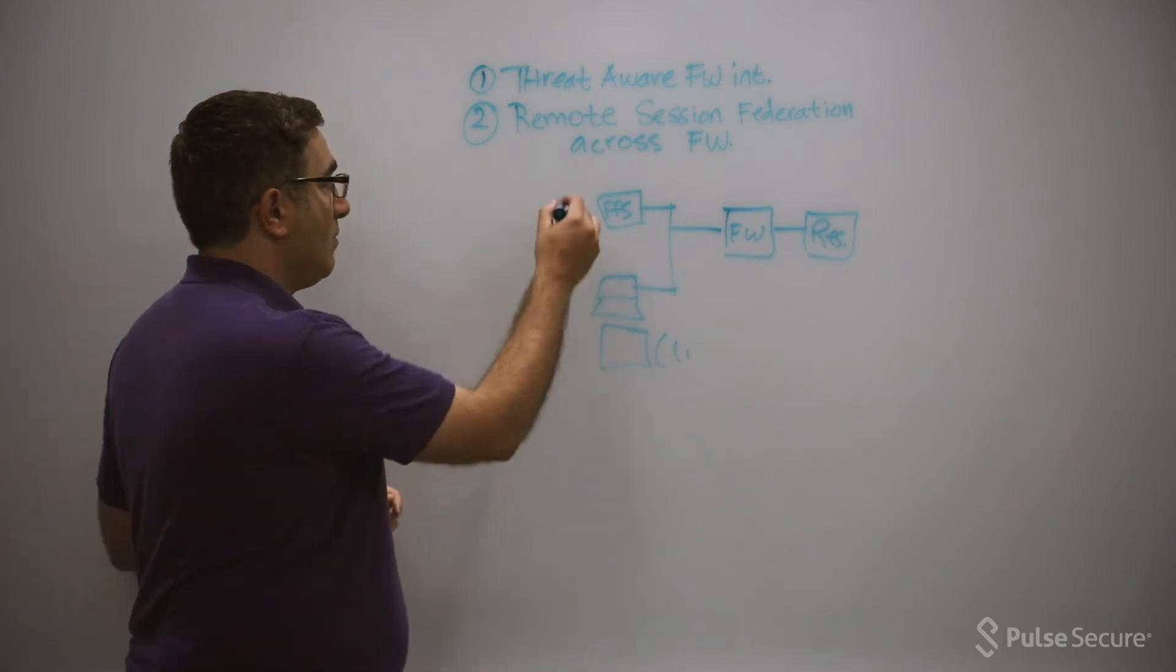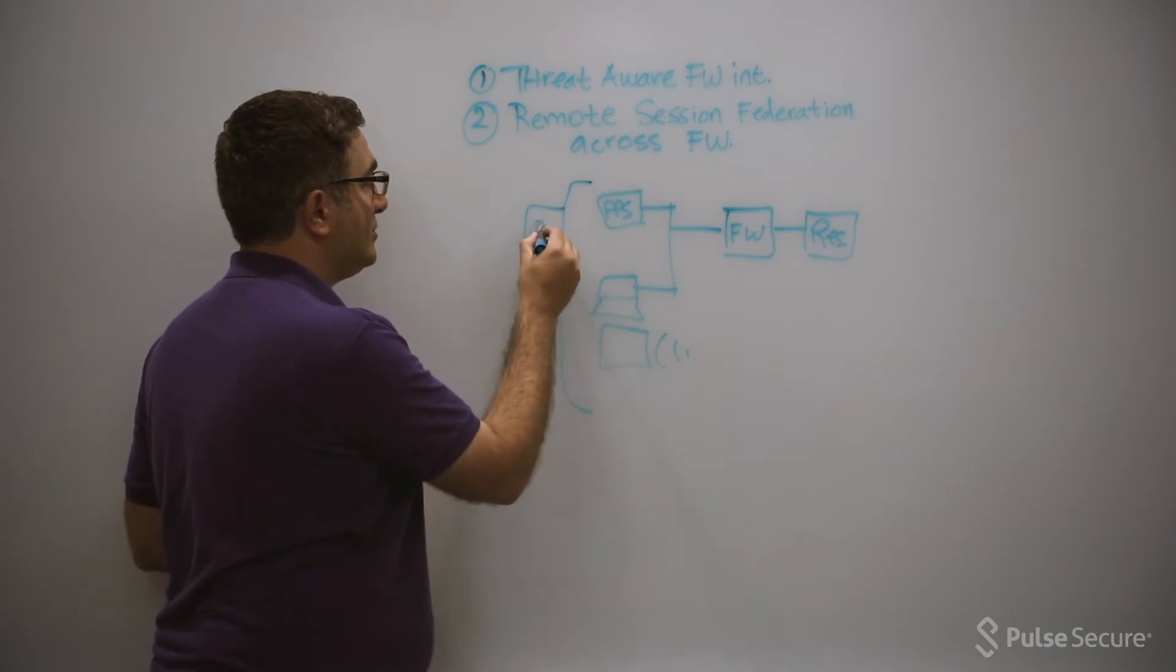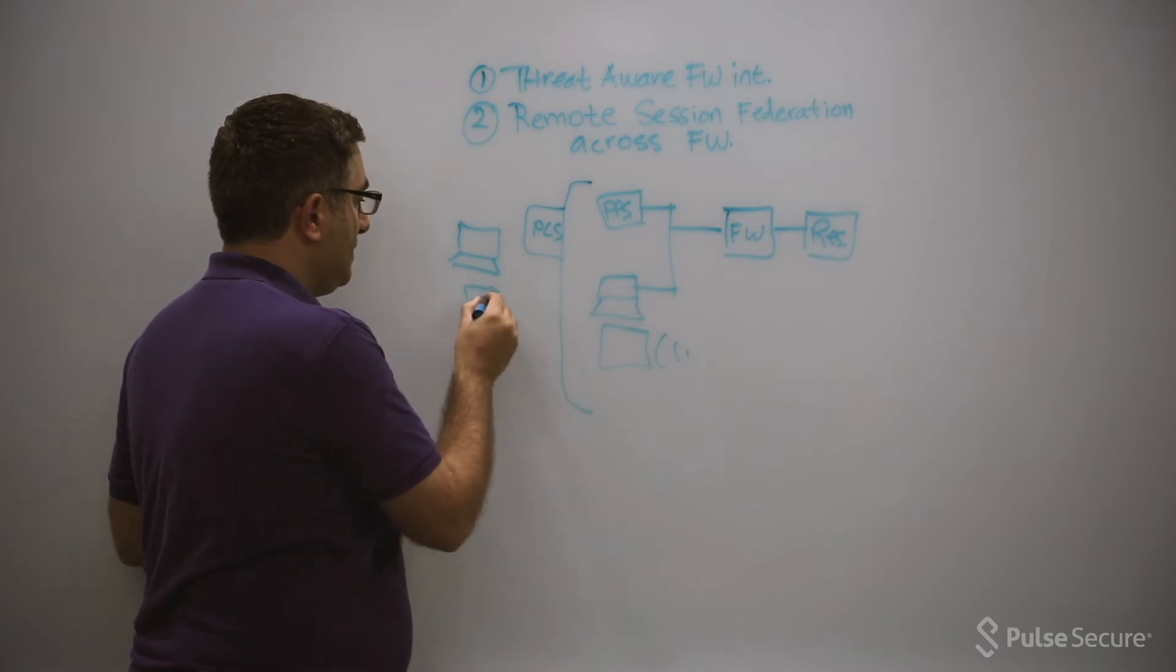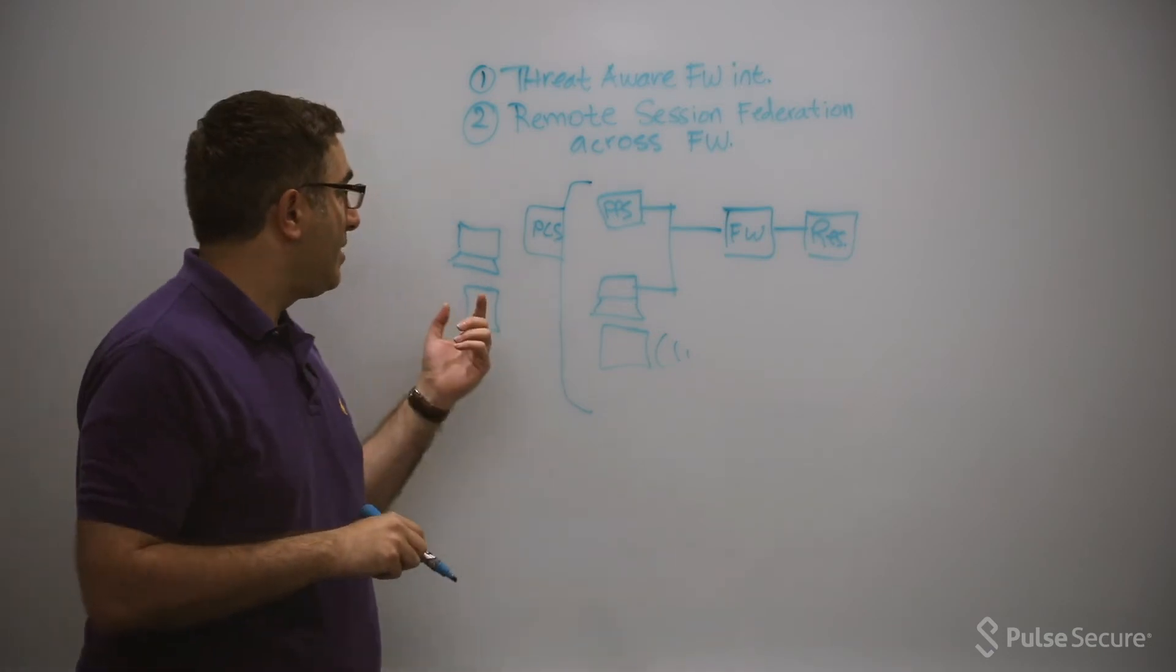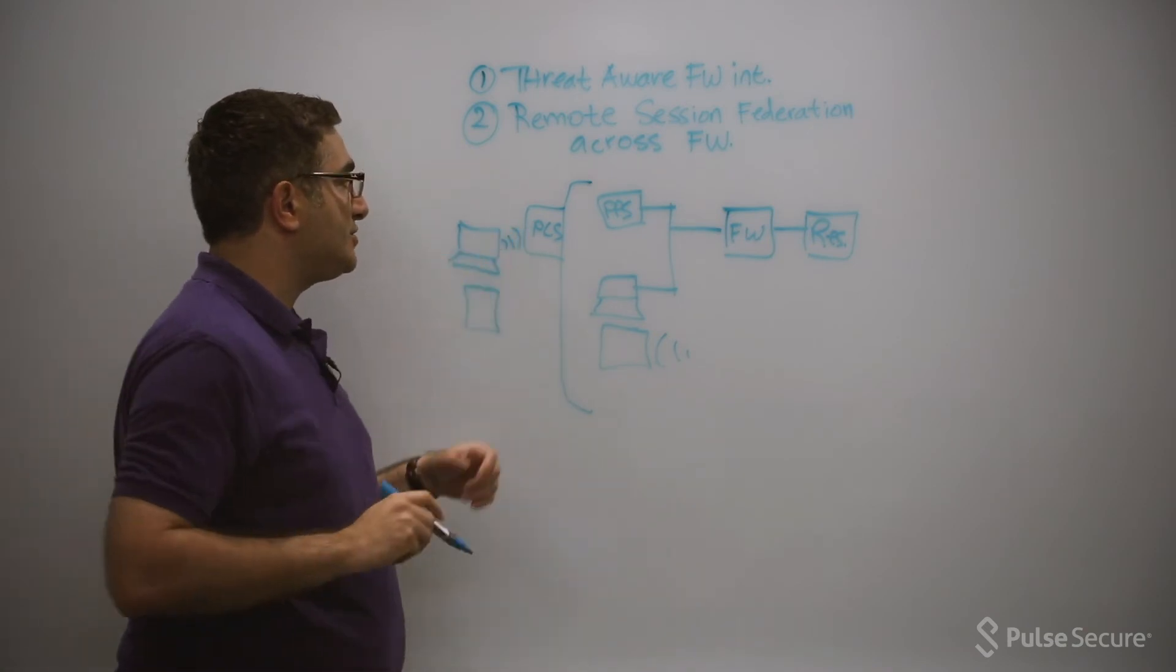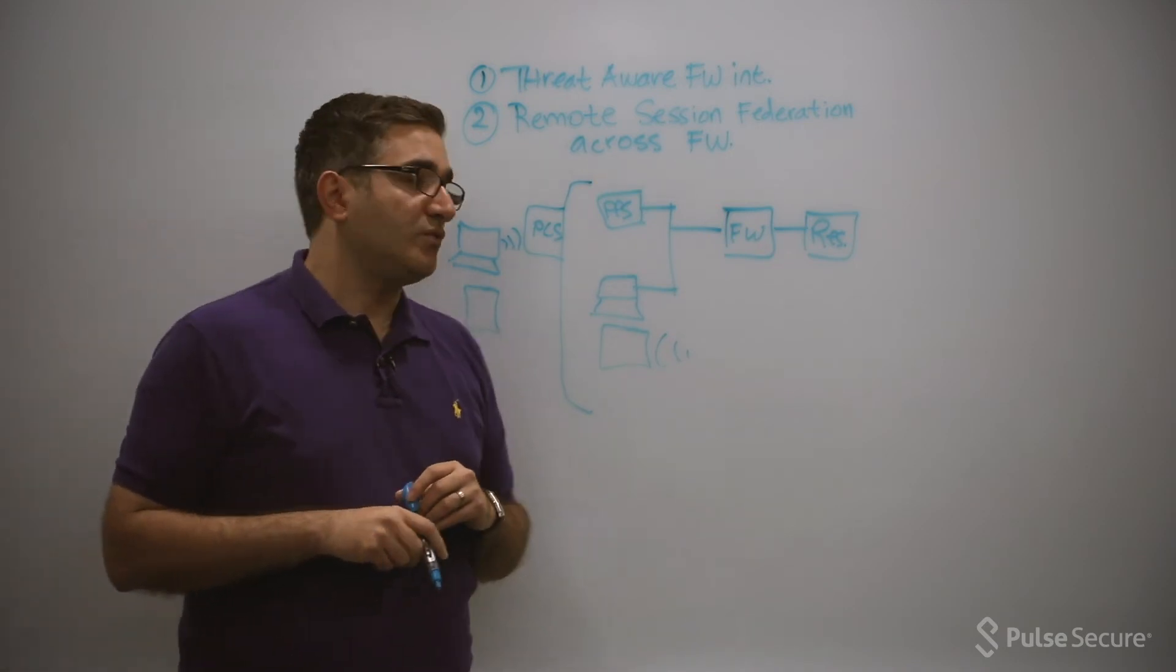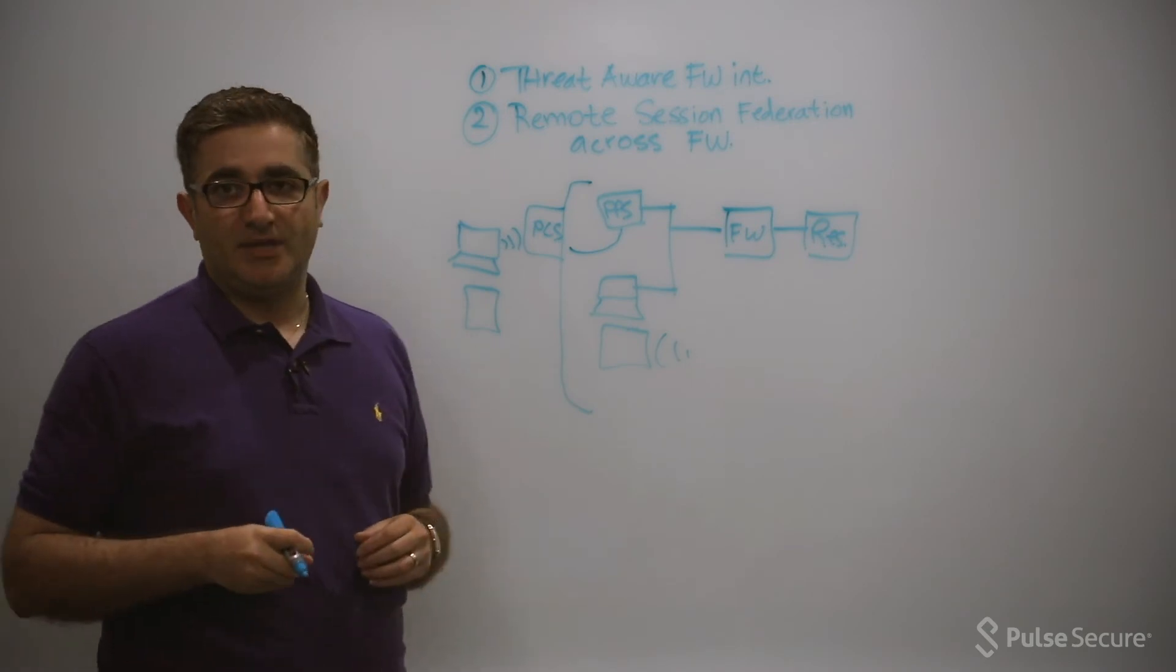So in this case, we're going to look at PCS sitting on the edge, and now these same end users are outside. So these same users on a mobile device or on a laptop are connected through VPN. As soon as the connection to VPN happens, one of the things that we do is we create a federated session between PCS and PPS.